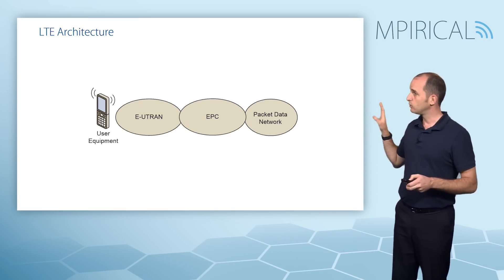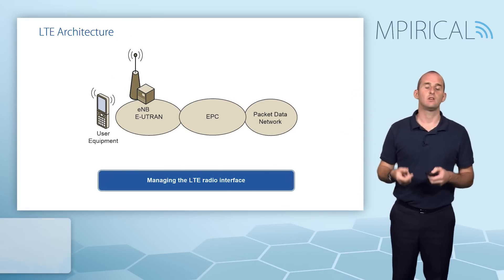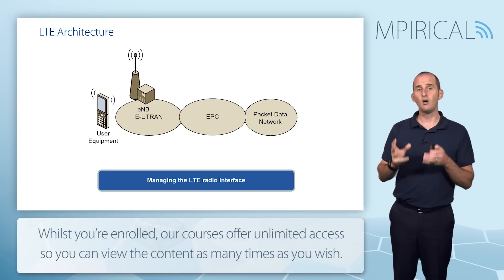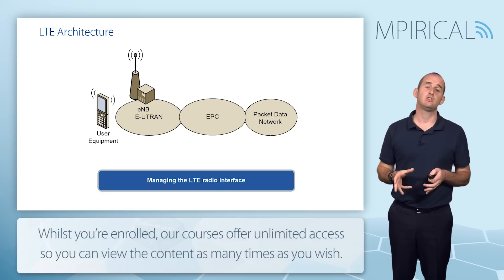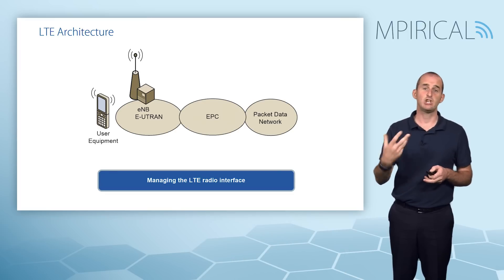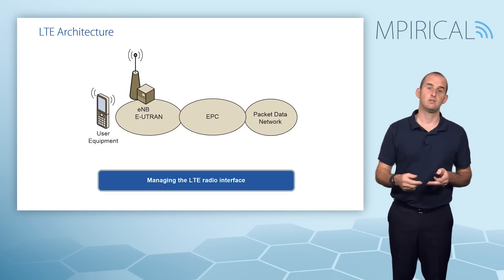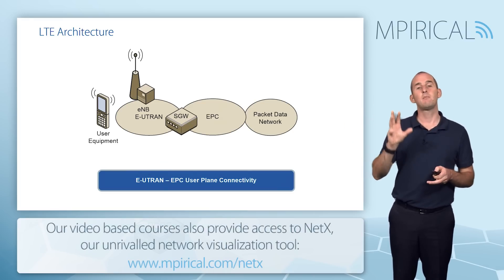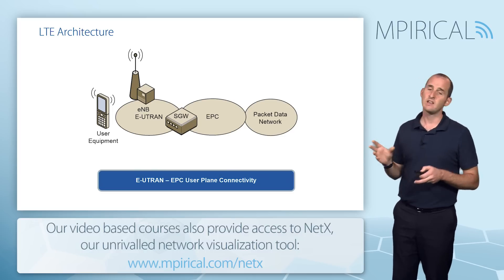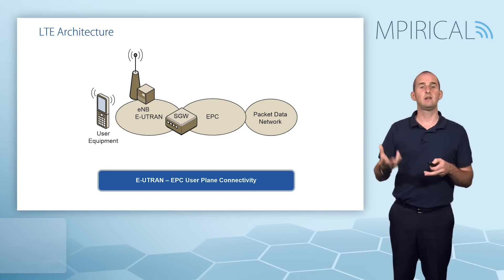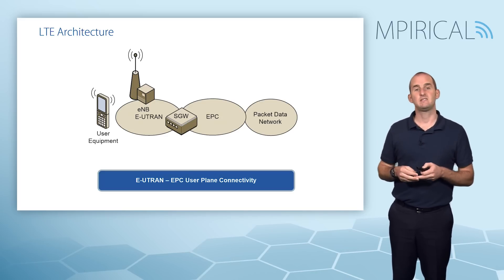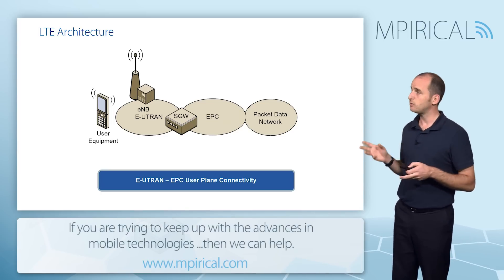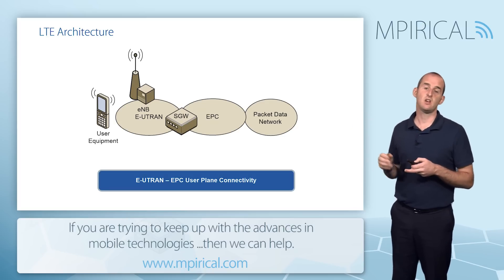In the RAN, we encounter the Evolved Node B — the only element in the EUTRAN. The Evolved Node B manages the air interface, handling things like scheduling, handovers, and security. Moving closer to the network, we encounter the first Evolved Packet Core device: the Serving Gateway, which provides anchored mobility between the EUTRAN and the EPC. As we move around the EUTRAN, E-Node Bs feed user plane traffic to the core via the Serving Gateway.